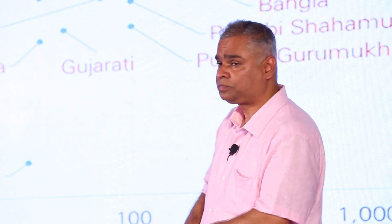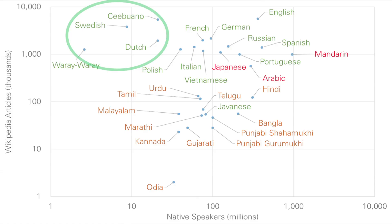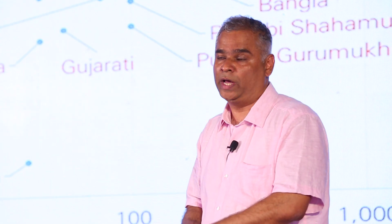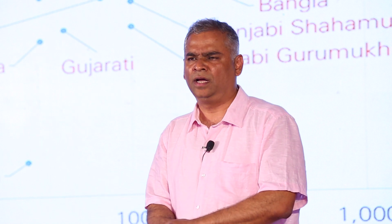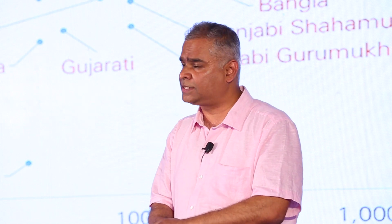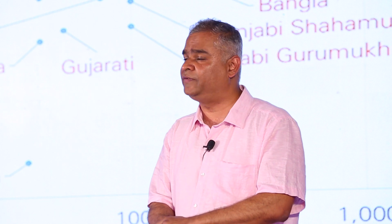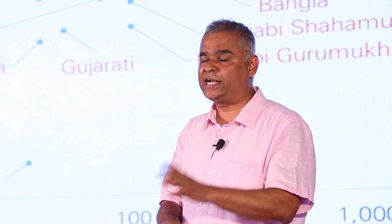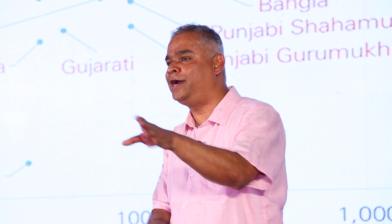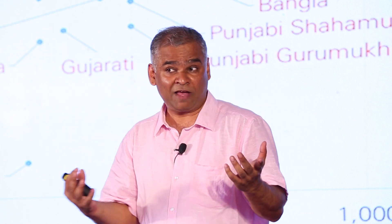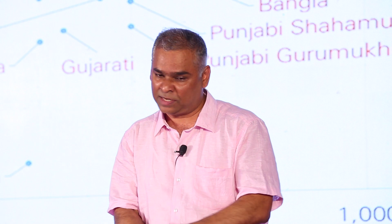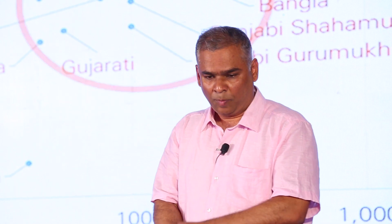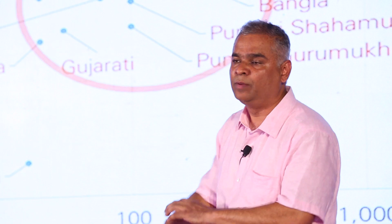In this corner on the left, we have languages which have a very small number of native speakers and still a very large number of Wikipedia articles. You probably have never heard of the language called Wari Wari — it is spoken in the Philippines and has only about 2.6 million speakers, that's between Andheri, Asalpha and Ghatkopar in population. But they have more than a million Wikipedia articles. Unfortunately, many of our Indian languages are sort of in the middle.